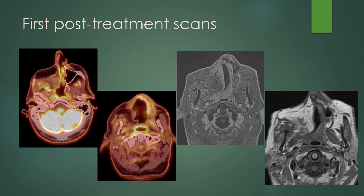Posterior to the flap, there's an area of FDG uptake but nothing really mass-like — it's right behind the flap after extensive surgery. More inferiorly, there's no abnormal uptake around the flap. On MRI, the flap is in place with no mass-like enhancement, some enhancement around the surgical site but nothing suspicious, and preserved fat planes. This would be a Category 2B — we do see some uptake and distortion that could all be post-surgical — recommending follow-up.